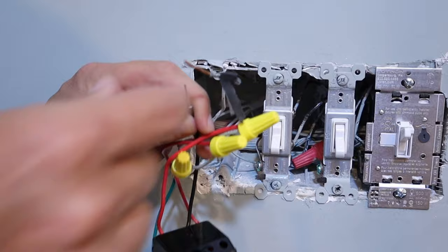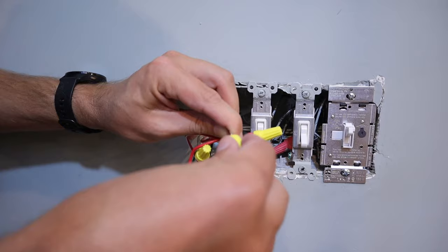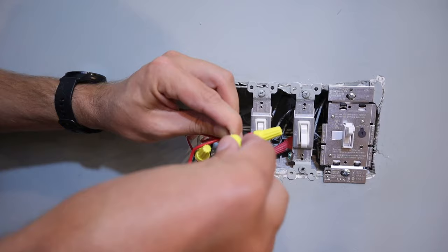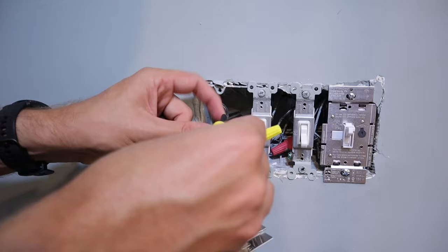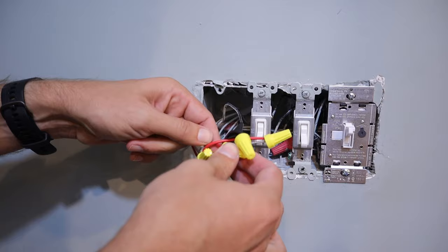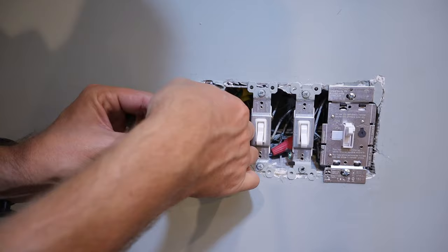And last but not least, we will now attach our black common wire coming out of the wall to the black common wire coming out of the dimmer switch. Then once you've got all of your wires together, you want to give them all a nice tug just to make sure that they're all in there nice and tight and aren't just going to fall out. Next, we can push all of our wires into the back of the box. Now we can install the screws.